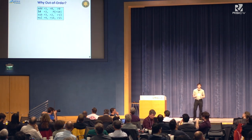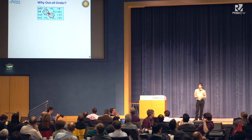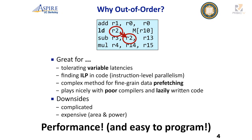Why out-of-order? It seems like a lot of work. You have something like a load instruction writing to R2, and the subtract depends on that, so the subtract can't go until the load comes back. The load may miss in the cache — you have no idea when it'll occur. But the multiply doesn't depend on those, so we can execute out of order. Out-of-order is great for tolerating variable latencies, finding instruction-level parallelism even if the programmer didn't know it was there, and it plays nicely with terrible compilers and lazy code.